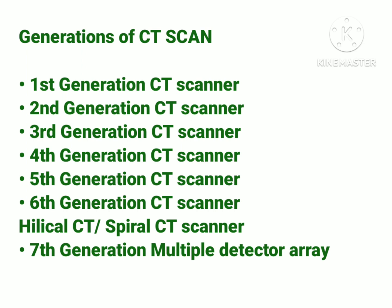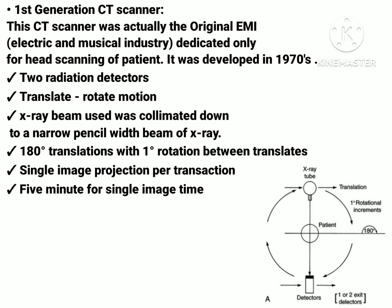We will be discussing them one by one, starting with the first generation CT scanner, which is also known as EMI CT scanner — meaning Electric and Musical Industry CT scanner — because it was developed by the Electric and Musical Industry in the 1970s. This scanner was particularly dedicated only for head scanning of patients. Two radiation detectors are used, made from sodium iodide, and the X-ray tube is there. Both the detectors and X-ray tube rotate around the patient.